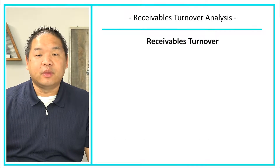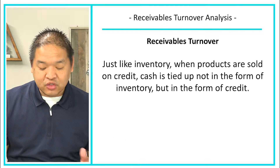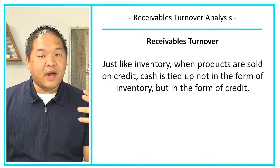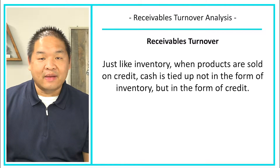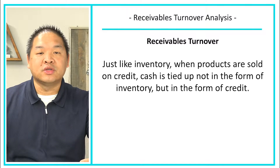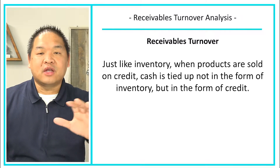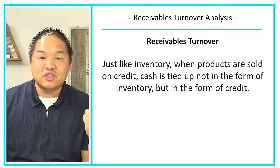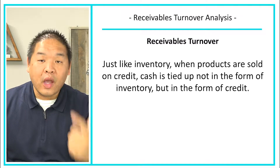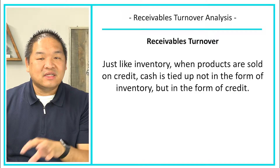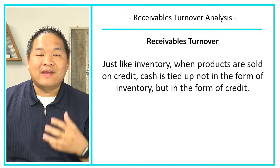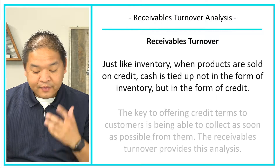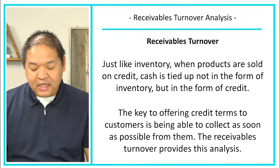So what about receivable turnover? Just like inventory, when products are sold on credit, cash is tied up — not in the form of inventory but credit. When we extend credit to our customers, our cash lifecycle is stretched a little bit longer, because our cash is not only tied up in our inventory, it's now tied up with our customer who we have to wait to pay us. Because our cash is tied up there, we can't invest in our own businesses or even invest in more inventory to put in our store.